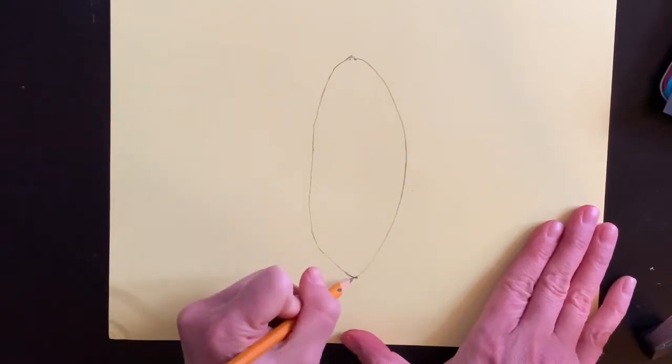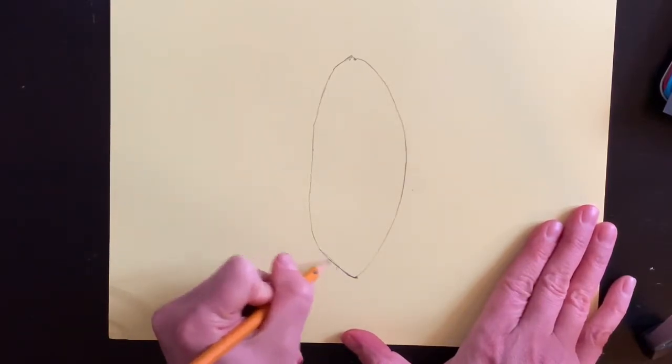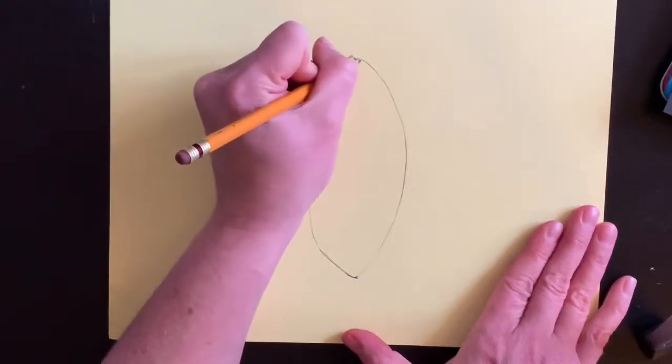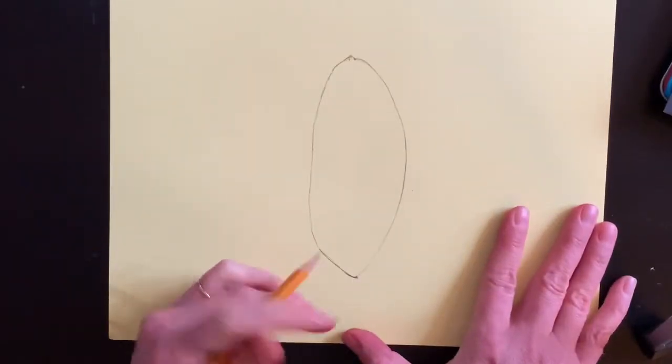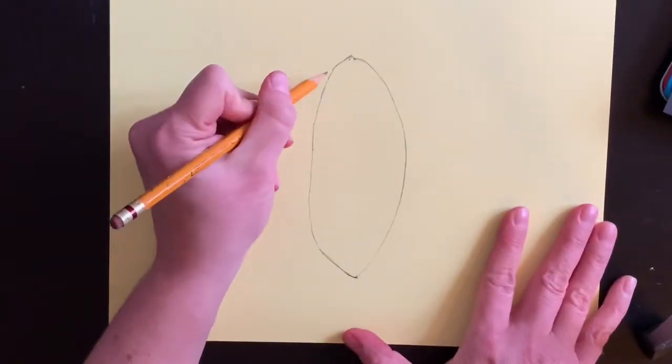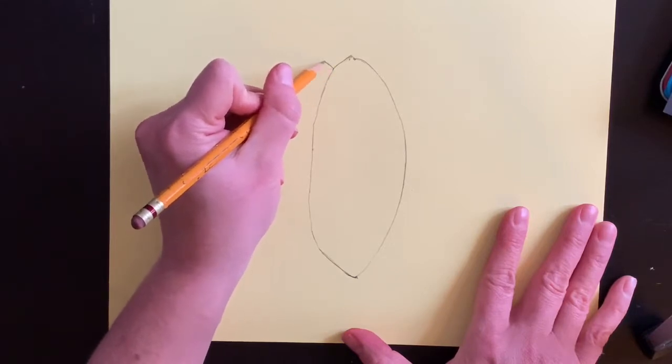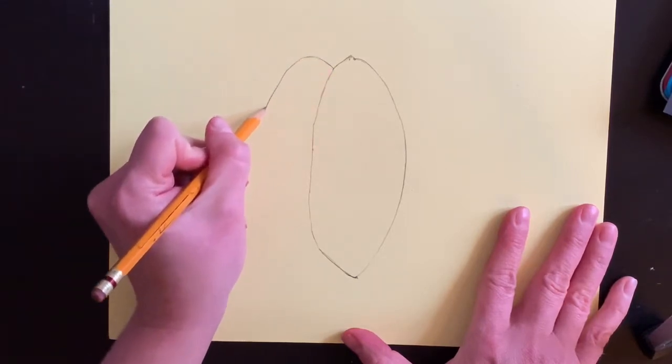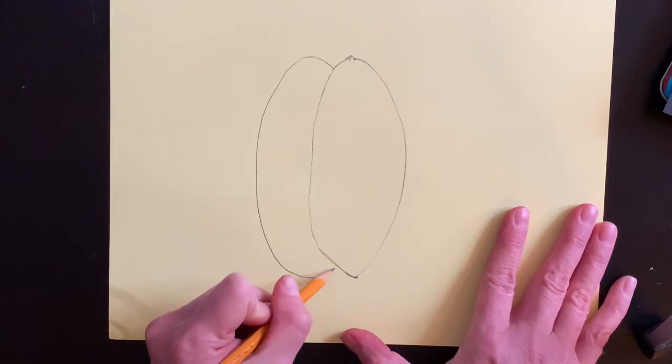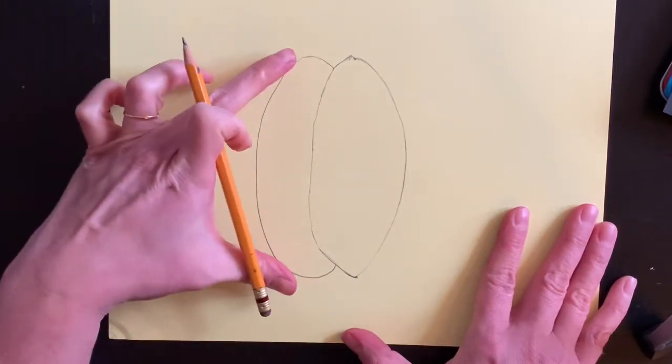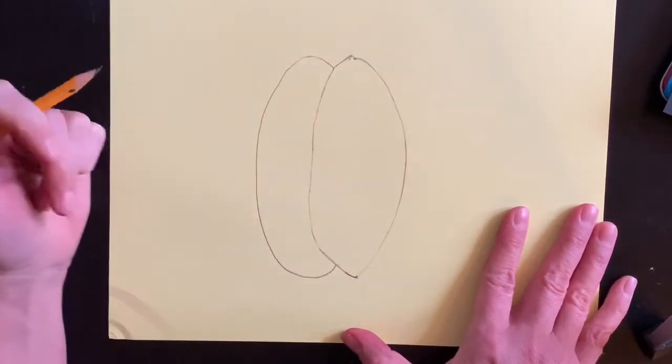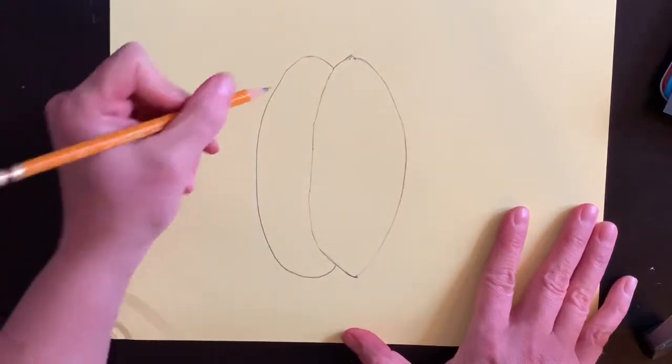Pumpkins aren't perfect so your lines don't have to be either. They're all bumpy and lumpy. Just draw your first little shape. Then on this side you come in and you do another curved line like that. I made it just slightly smaller than the width from top to bottom.